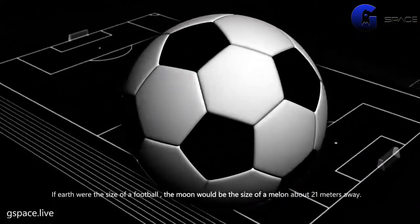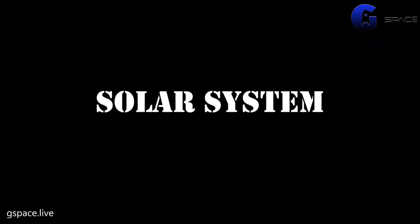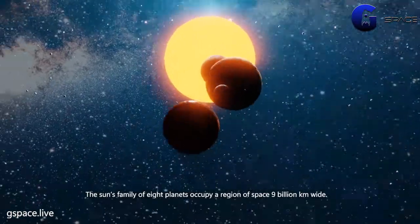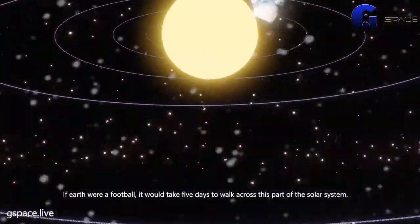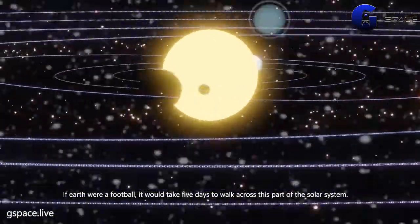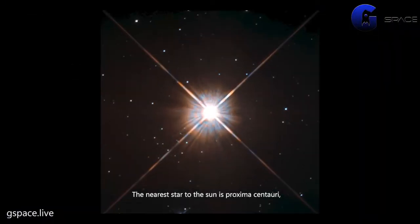Solar system: the sun's family of eight planets occupy a region of space 9 billion kilometers wide. If Earth were a football, it would take five days to walk across this part of the solar system. Stellar neighborhood: the nearest star to the sun is Proxima Centauri, which is just over four light years away. There are around 2,000 stars within 50 light years of the sun.